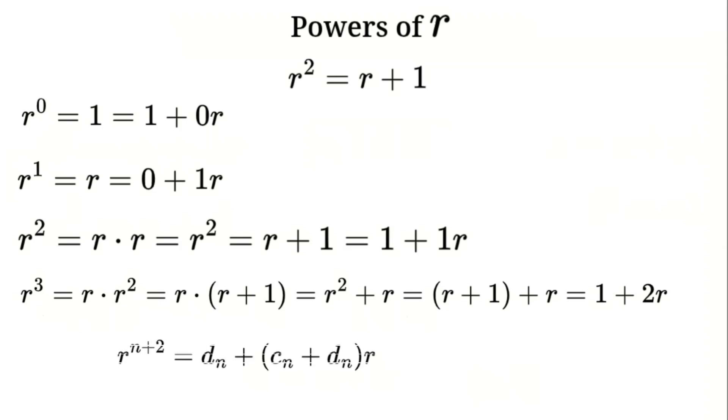In general, for R to the n plus 2, take R times R to the n plus 1, where R to the n plus 1 is Cn plus DnR. This gives CnR plus Dn times R squared. Since R squared is R plus 1, that's CnR plus Dn, which simplifies to Dn plus Cn plus DnR.